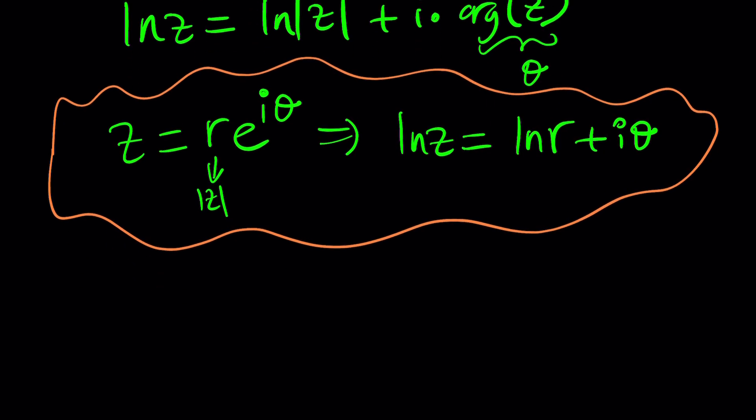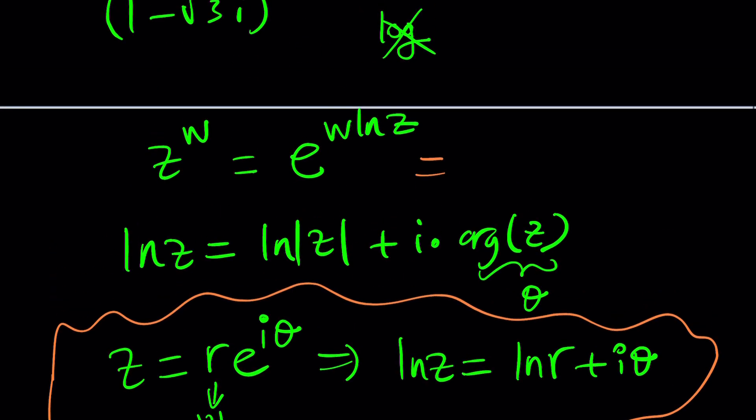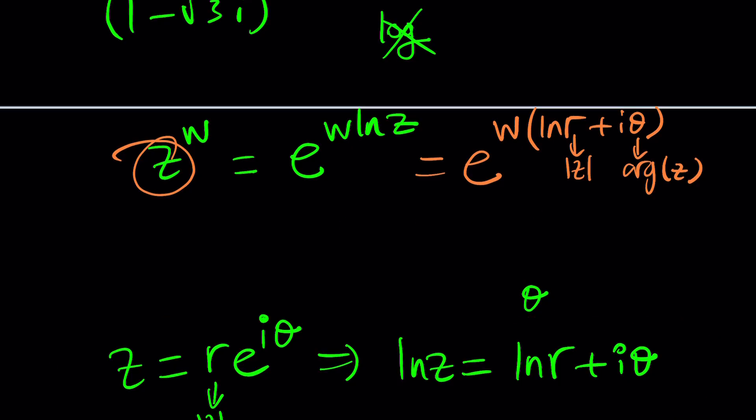So basically in other words if z can be written as r times e to the i theta where r is the modulus or the absolute value of z then this implies ln z equals ln r plus i theta which is a nicer way of writing things. Now with that we can come up with a formula something that looks like w times ln r plus i theta. So theta is the argument of z and r is the absolute value of z and z is the base.